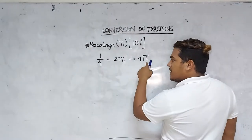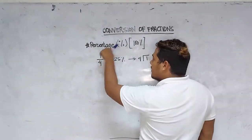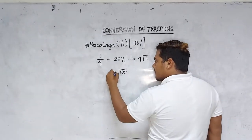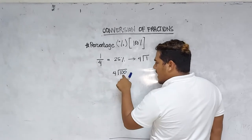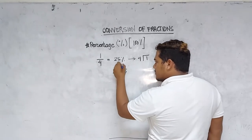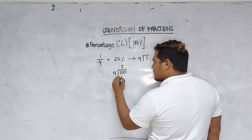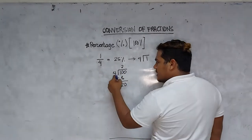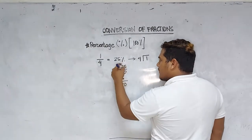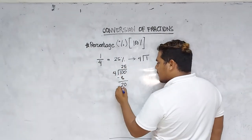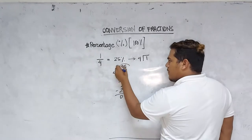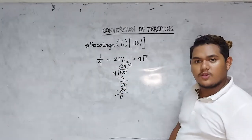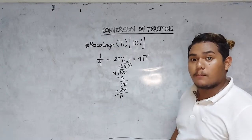You have to multiply the dividend, or the numerator, by 100, so that this becomes 100 divided by 4. So: 10 divided by 4 is 2; 2 times 4 is 8; 10 minus 8 is 2. Bring down 0. 20 divided by 4 is 5; 5 times 4 is 20; remainder 0. Thus, you have 25%. That is how you convert fractions into percentage form.